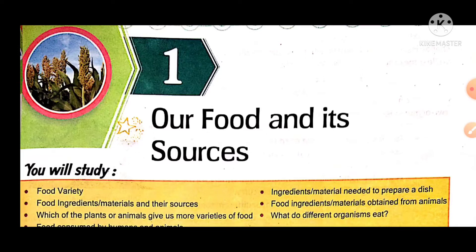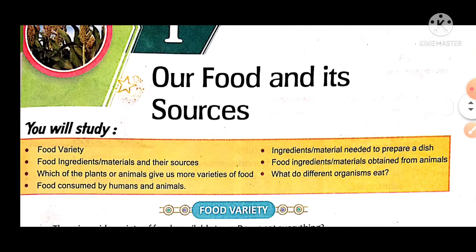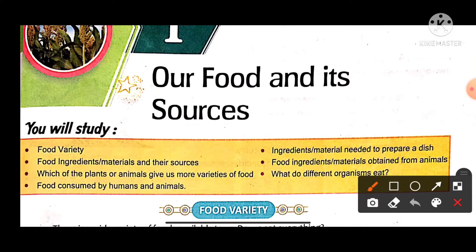Now we will see what are the topics of our chapter. Number one is food variety. Second is ingredients — materials needed to prepare our dish. Next is food ingredients and materials and their resources. Fourth is food ingredients and materials obtained from animals.